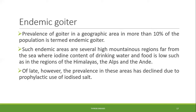Endemic areas include several high mountainous regions far from the sea, where iodine content of drinking water and food is low — such as the Himalayas, the Alps, and the Andes. The prevalence in these areas has declined due to prophylactic use of iodized salt. Iodized salt is essential in areas where there is a lack of iodine in the water.